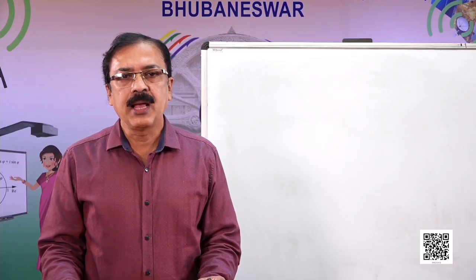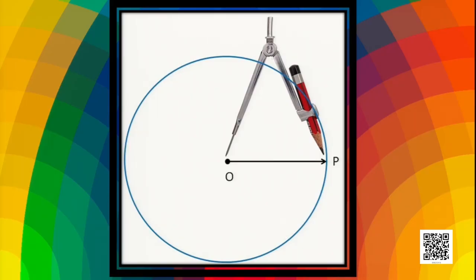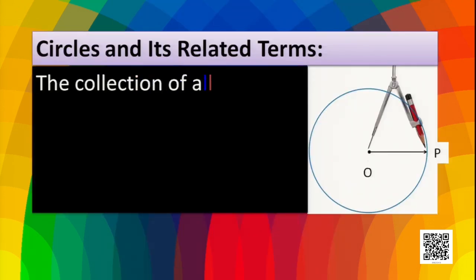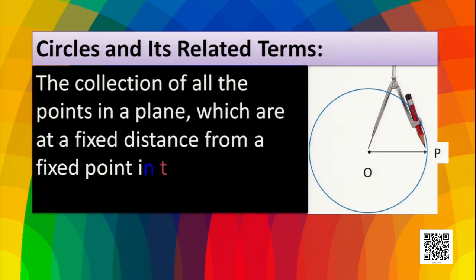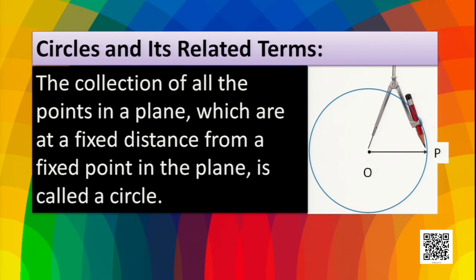From this drawing of a circle, we can define the circle. O is fixed, but the pencil is always at a fixed distance. So we can say that the collection of all the points in a plane which are at a fixed distance from a fixed point in the plane is called a circle. O is the fixed point, and all the collection of points on which the pencil has moved trace a path called a circle.